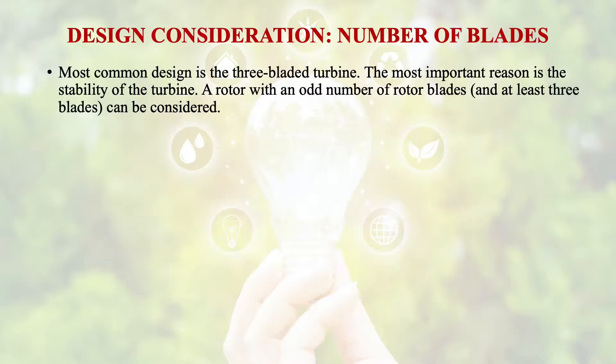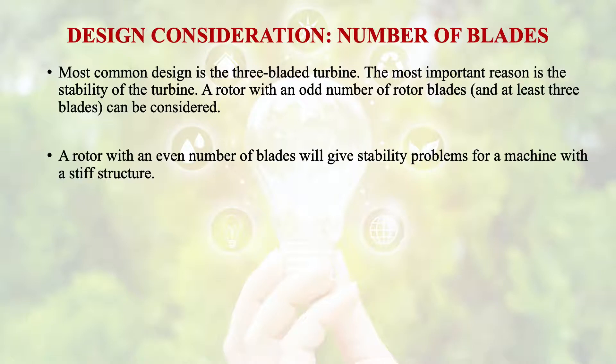If we talk about design considerations, the main component is the design of the blades. The most common design available in wind turbines is the three-bladed turbine, and the most important reason for this is the stability of the turbine. A rotor with an odd number of blades can be considered, but at least there should be three blades. Even number of blades will give stability problems for a machine with a stiff structure, so we avoid even number of blades and go for odd numbers.